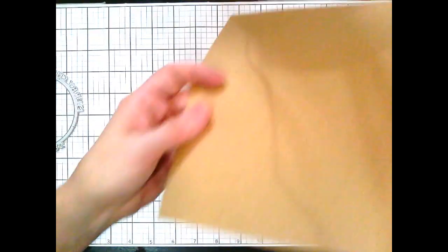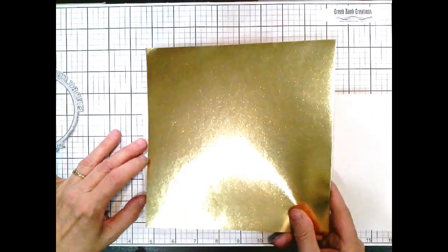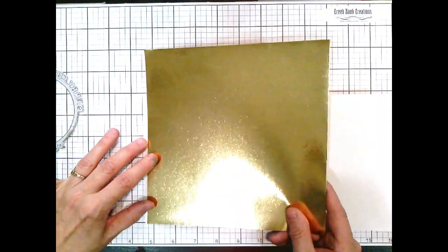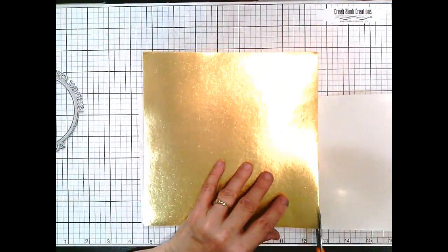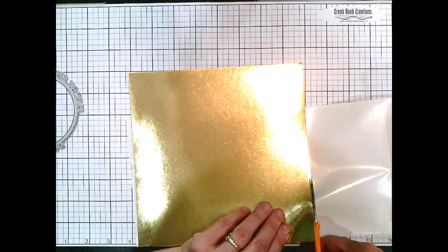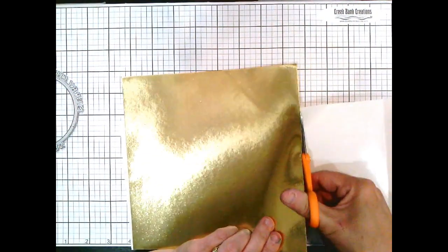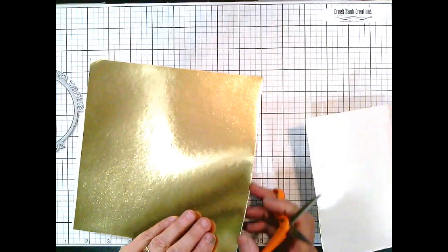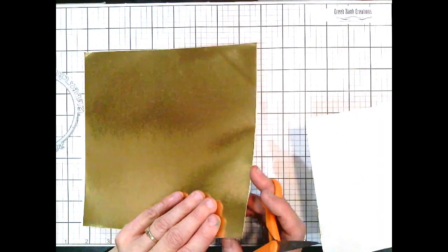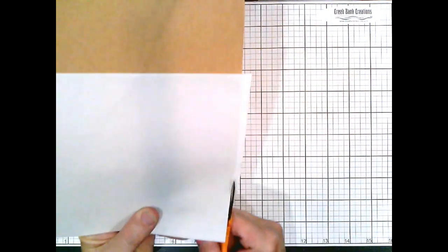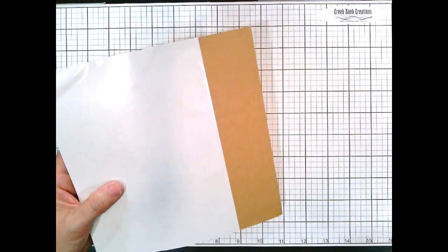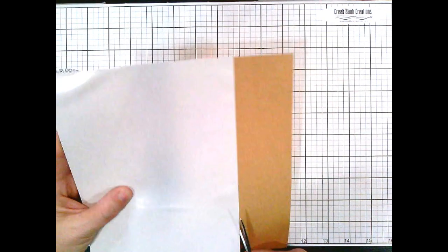And I'm going to take our super tacky tape. This is our Creek Bank Creations super tacky tape. This comes in a 3-inch roll or a 6-inch roll. And I want to put my paper in it so I have the pattern side or the shiny side up. And then I'm going to take my scissors and trim it out. Now when I trim it out, I leave a little bit of an edge on there. I don't want any adhesive showing on this edge.